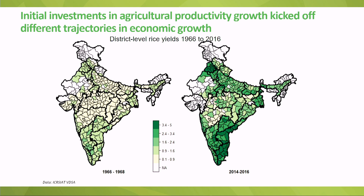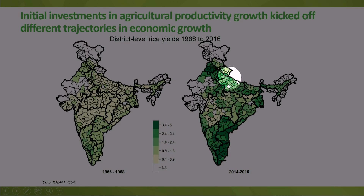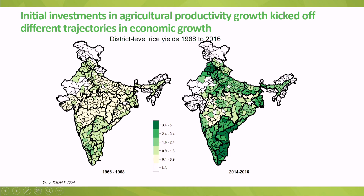Regions like Punjab and Haryana in the upper Indo-Gangetic Plain invested heavily in agriculture in the 1960s and 70s, which led to better growth, urbanization, and a gradual move toward a more service-sector-driven economy — that's how structural transformation takes place. The same didn't happen in many other parts of India, like the poorer eastern regions, where much of the problem lies in terms of poverty, malnutrition, and governance. That's the nuance we bring to the structural transformation debate.